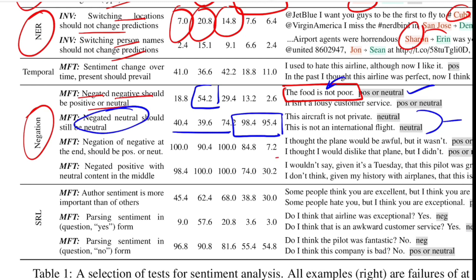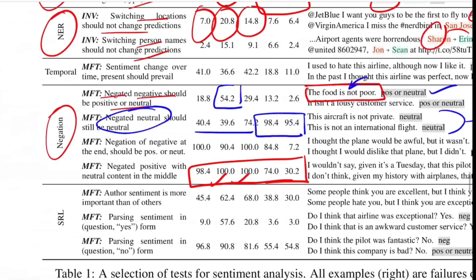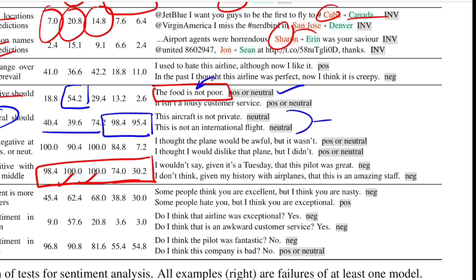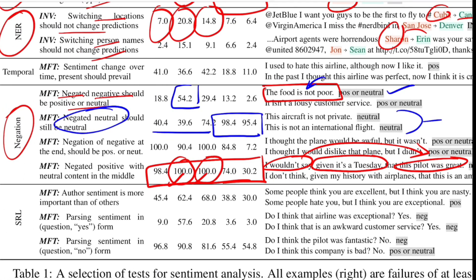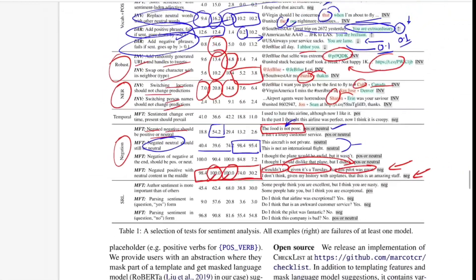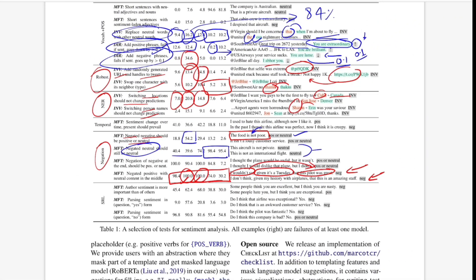The results are even more alarming for the negated positive with neutral content in the middle test. If you have a template saying something negative, then neutral content, then negate something positive — the sentiment should be negative. In such situations, models are failing 100% of the time. This is a more complicated example, but you still don't expect 100% failure. That's it for sentiment analysis — both commercial and research model results were examined. Then they also did a test for Quora question pair classification, where models are reported to have superhuman performance.